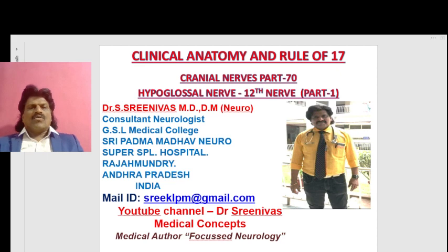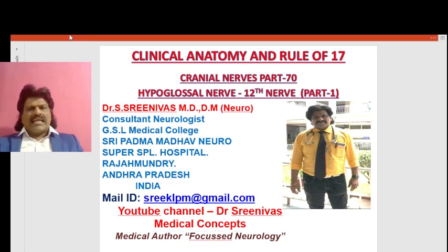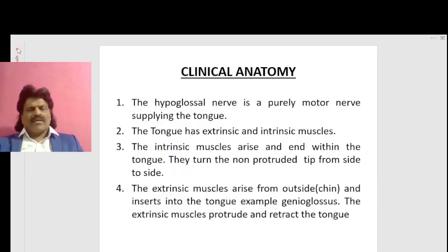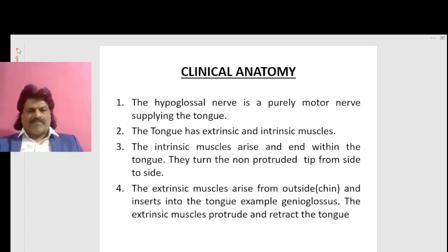Rule of 17 — Cranial Nerves, Part 70: Hypoglossal Nerve, 12th Nerve, Part 1. We will cover the clinical anatomy of the 12th cranial nerve and the Rule of 17. First, let's talk about the clinical anatomy of the 12th nerve, and then the Rule of 17.